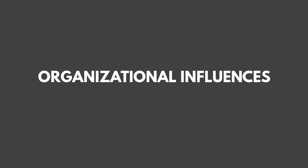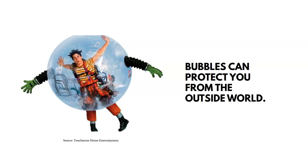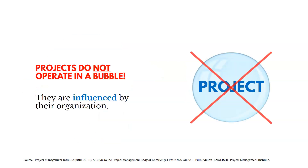We're first going to talk about influences inside of the organization that change how we manage our project. There's this idea of bubbles being able to protect you from the outside world, like the movie Bubble Boy. The bubble protects him from germs in the outside world. But in project management, our projects don't operate in a bubble.